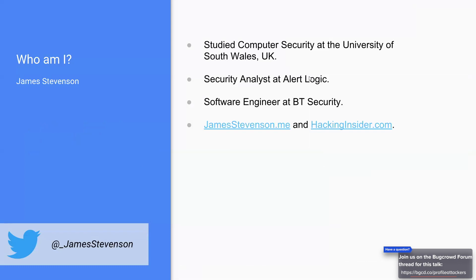Before I do that — who am I? My name is James Stevenson. Two years ago I was a student at the University of South Wales in the UK studying computer security. Before that I was a security analyst at a company called Orbit Logic, and these days I'm a graduate in BT Security. I also run a few websites, and I'm on Twitter at underscore James Stevenson.